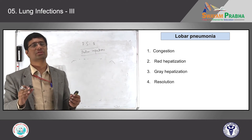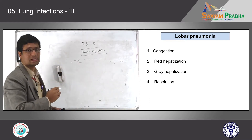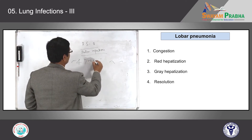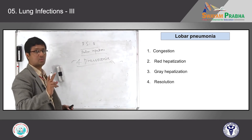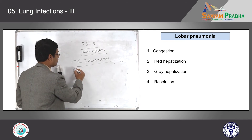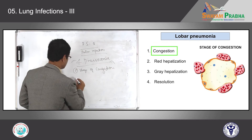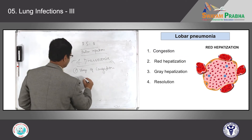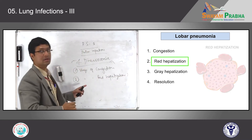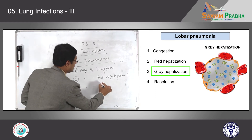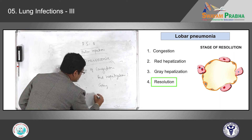When we say lobar pneumonia, all the books describe certain stages. There are four clearly mentioned stages depending on the duration of infection or inflammation. The first stage is the stage of congestion. The second stage is the stage of red hepatization. The third stage is the stage of grey hepatization. And the fourth stage, when everything resolves, is the stage of resolution. Let's see each stage under microscopy.